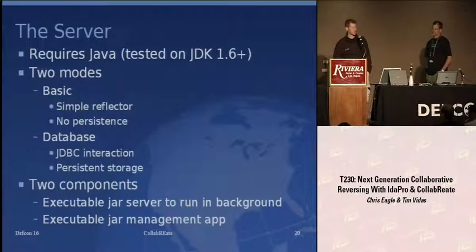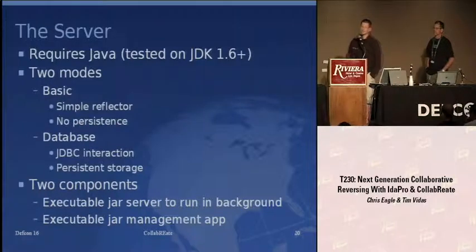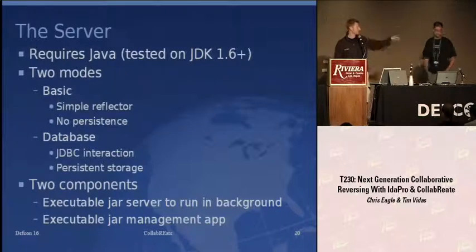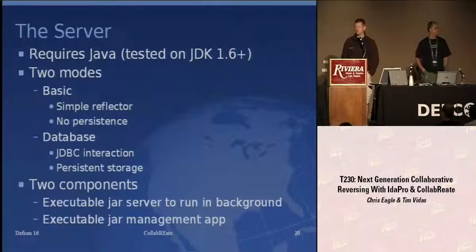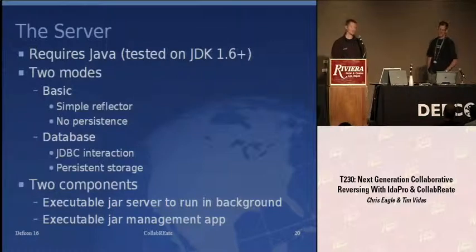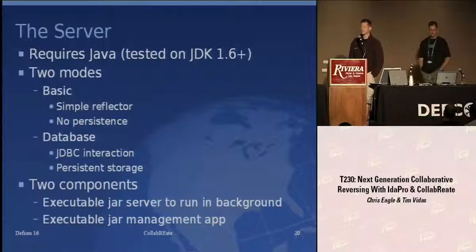The server requires Java — we tested it on JDK 1.6. There are two modes: the simple reflector and the database mode. For database mode you'll need the Java connection software for the database to allow persistent storage. The plugin is available now from the various websites or the local website here. The server will be available starting tomorrow, available in source and as a jar. It's also available as a VMware virtual appliance on the VMware site, so you can literally just start it up and connect to it.